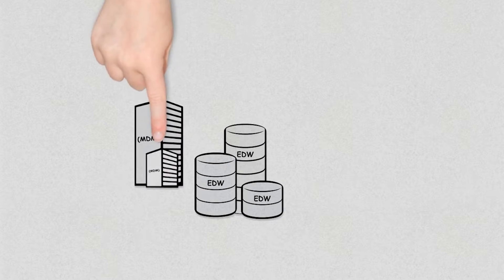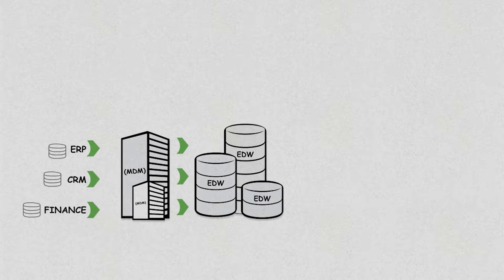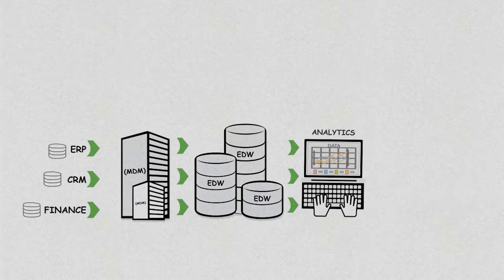Sometime in the 80s, the enterprise data warehouse emerged as the architectural model for the flow of data from operational systems to decision support environments.